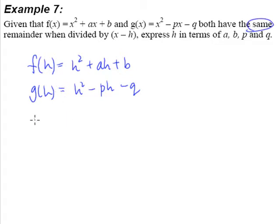So what this means is h² + ah + b is the same as h² - ph - q.